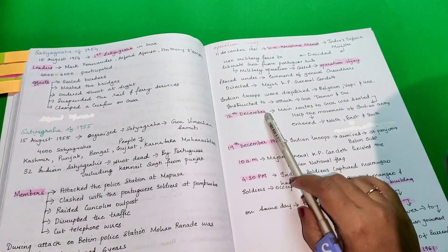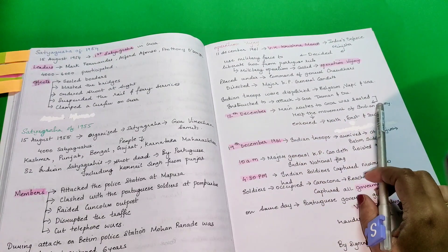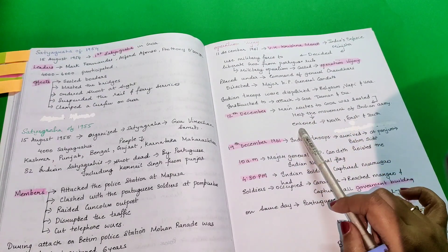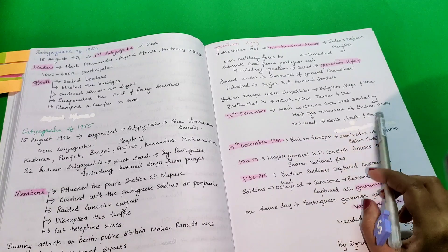On 12 December, main route to Goa was sealed that had the movement of Indian army. They entered north, east and south.